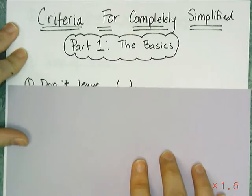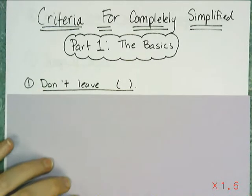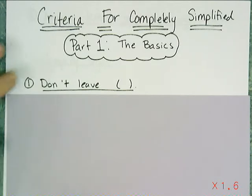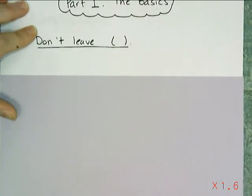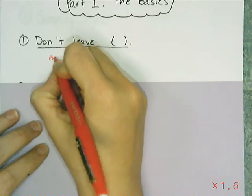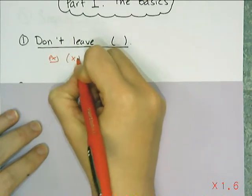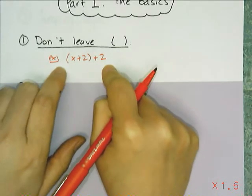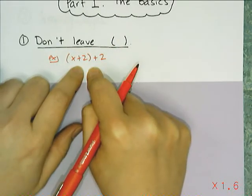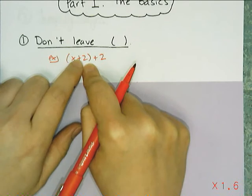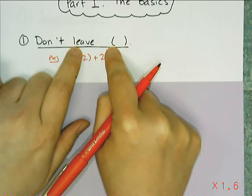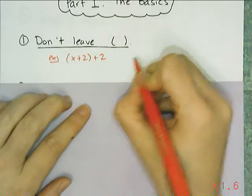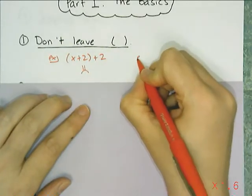So the first rule is to not leave any parentheses. So your expression is not simplified if there's still parentheses in it. So for example, if I see the quantity x plus 2 plus 2, this is not considered simplified, and so I can't leave my answer like this. And there's a property I'm going to use called the associative property that allows me to change my parentheses, and I can add 2 plus 2 and get 4.